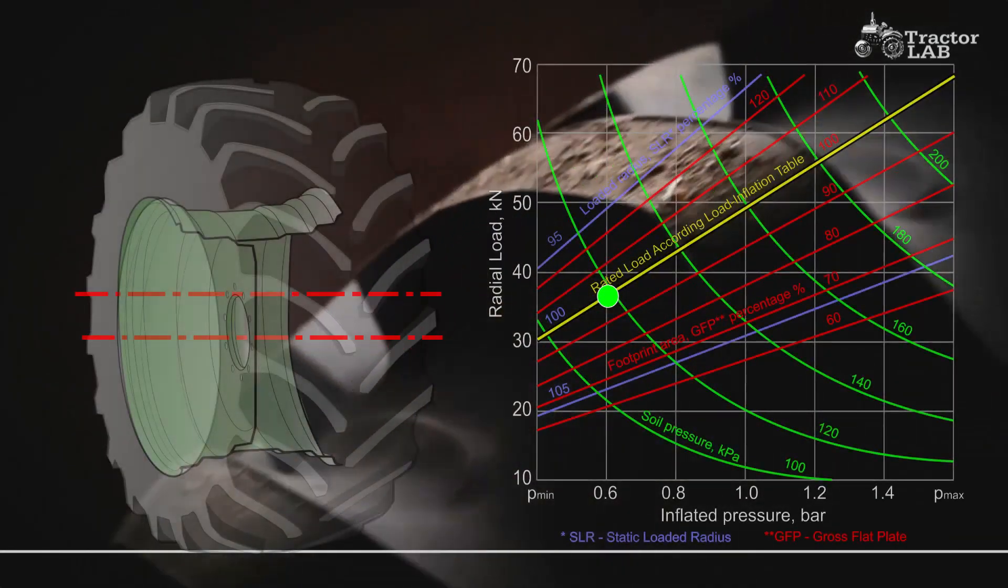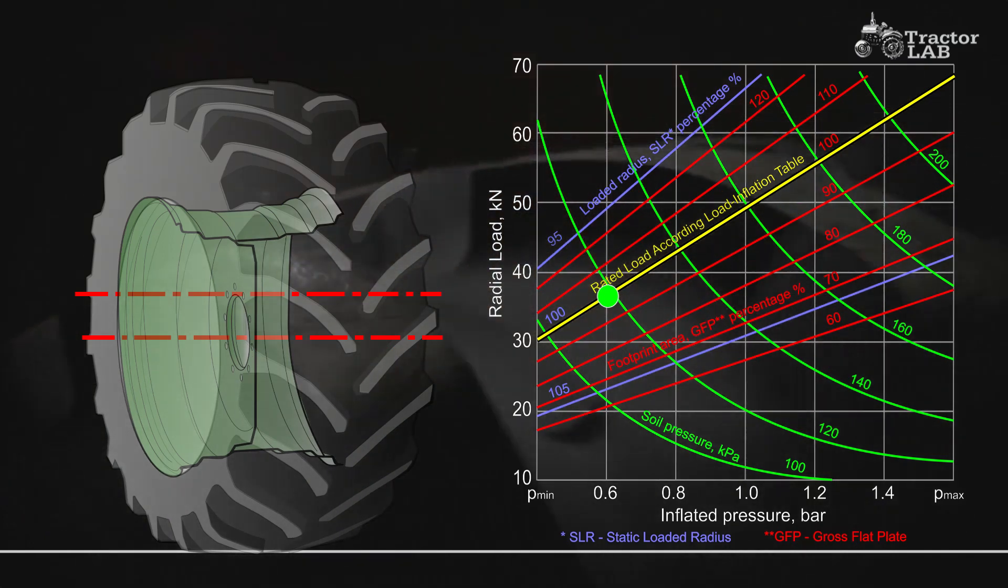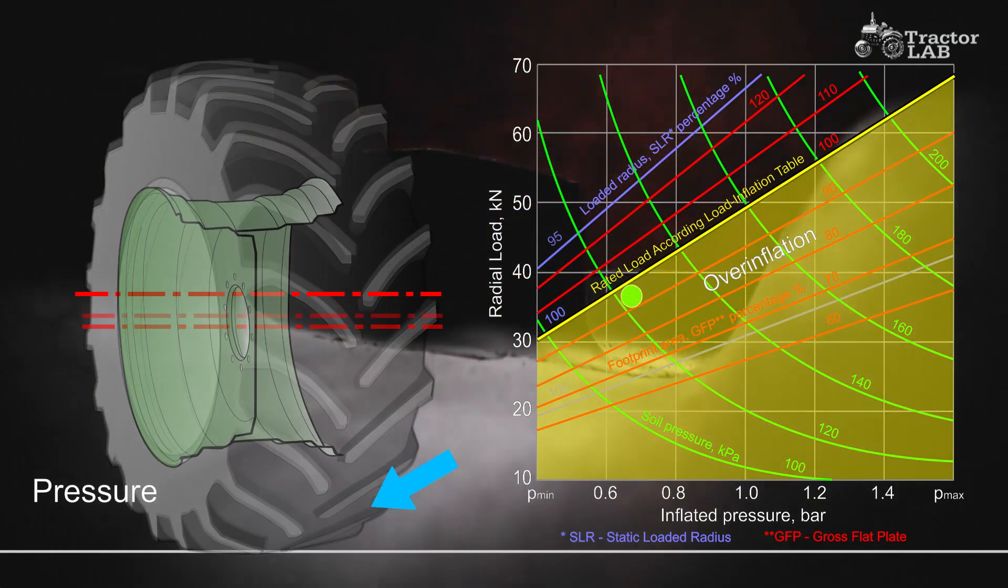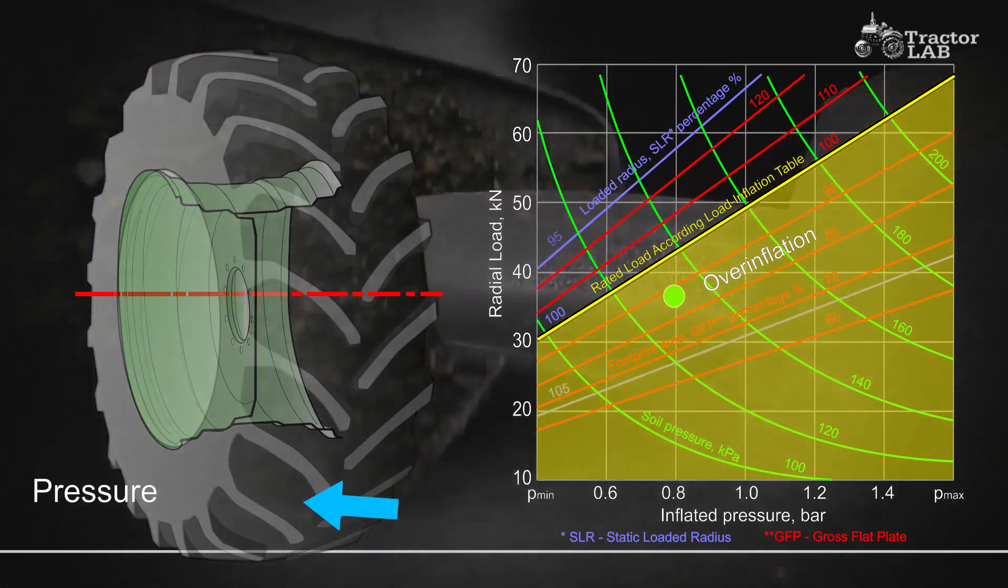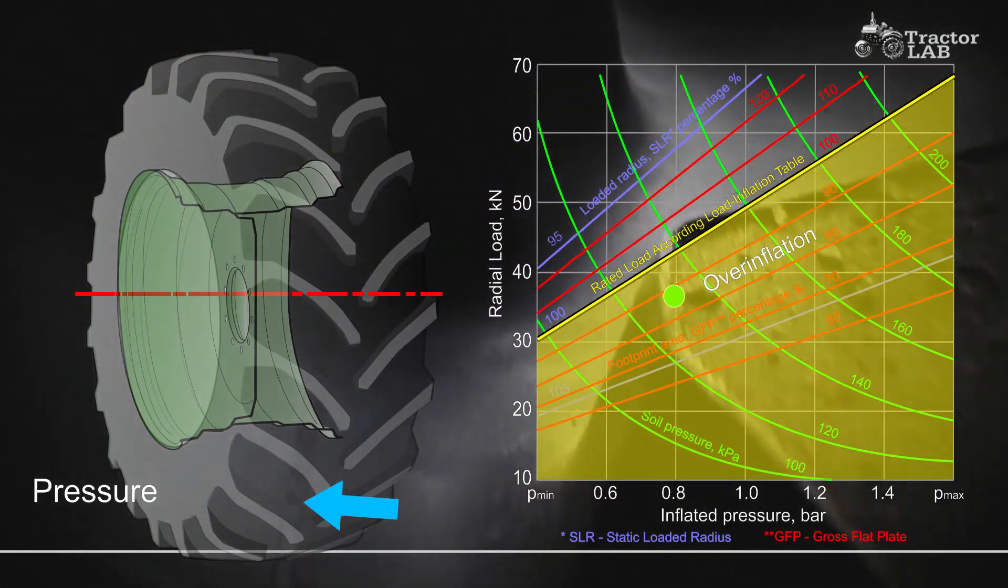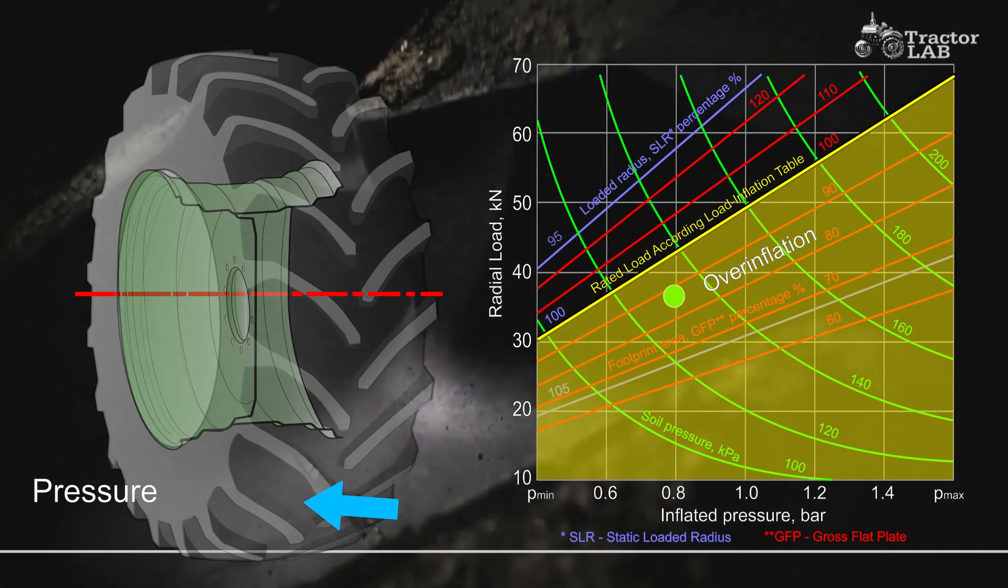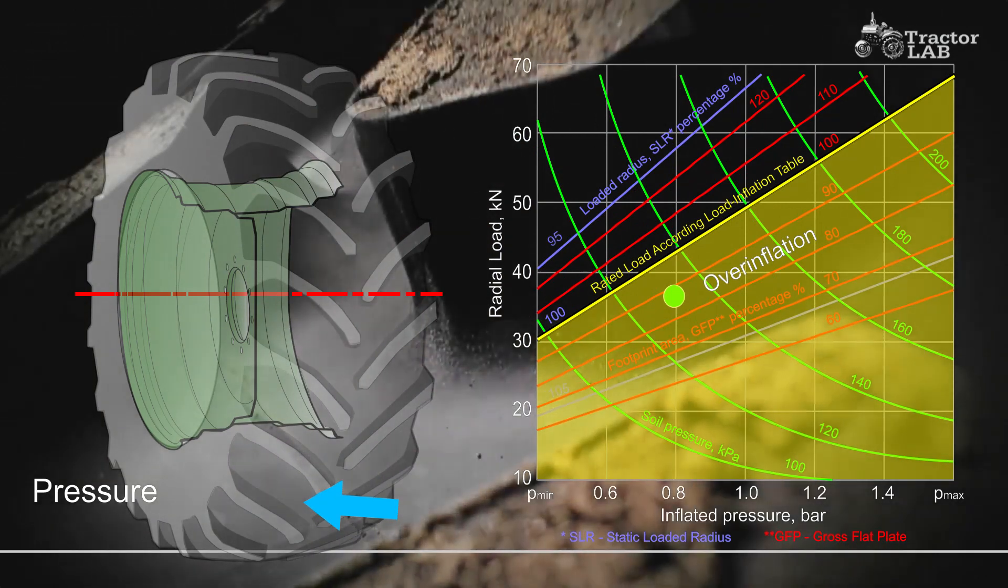Tire over-inflation: Over-inflation results in an under-deflected tire carcass. The tread is more rounded and wear is concentrated at the center. Traction is reduced in high torque service because both width and length of the ground contact area are reduced.